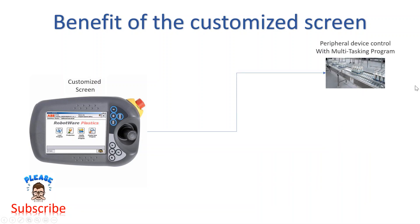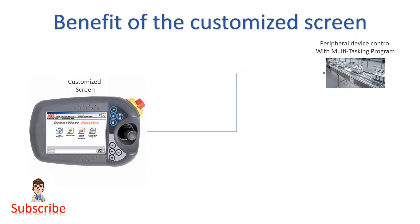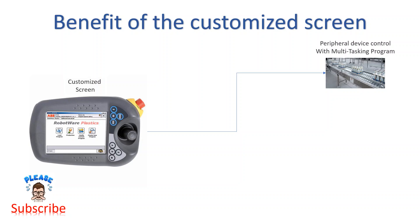Let's have a look. The first benefit is peripheral device control with multitasking program or without multitasking program. You can add a screen for controlling the conveyor — conveyor speed, conveyor on and off — and cylinders. You can control those with a customized screen.